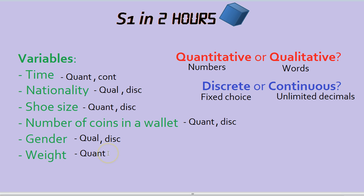And weight. Weight, you could have unlimited decimals. You could be 12.684 stone, so this is a continuous variable.